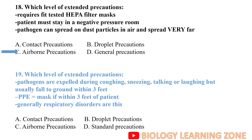Which level of extended precautions applies when pathogens are expelled during coughing, sneezing, talking, or laughing, but usually fall to the ground within three feet? If the patient's distance is less than three feet, this is the case of droplet precautions. The difference between droplet and airborne is the distance — within three feet means we adopt droplet precautions.